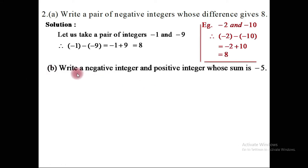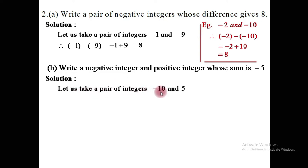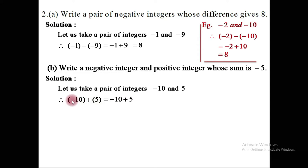Part b: write a negative integer and a positive integer whose sum is minus 5. We need two integers of opposite sign. Let us take minus 10 and plus 5. Taking the sum: removing brackets gives minus 10 and plus 5. Opposite signs are subtracted: 10 minus 5 is 5. The bigger absolute value 10 carries the negative sign, so the answer is minus 5.